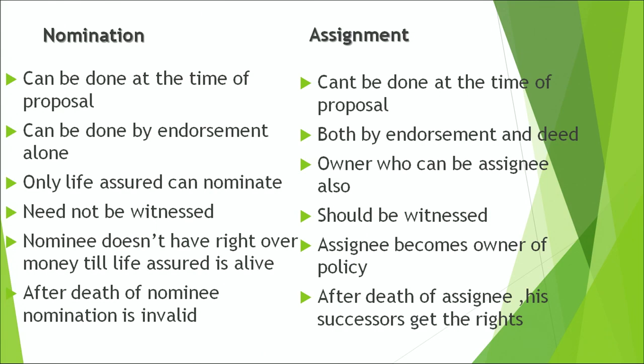The nominee does not have rights over the money while the life assured is alive. In assignment, the assignee becomes the owner of the policy and has all rights over the policy money. After the death of the nominee, the nomination becomes invalid. But after the death of the assignee, his successors get the rights. When you assign a policy to someone else, you lose the right over it; and if the assignee dies, his legal heirs receive the policy money.